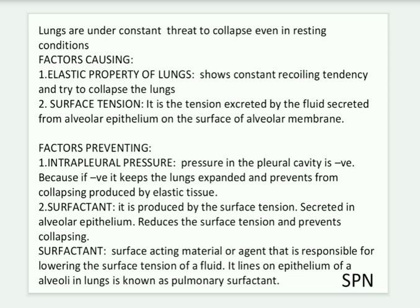The factors preventing collapse are intrapleural pressure and surfactant. Intrapleural pressure is the pressure in the pleural cavity; it is negative, which keeps the lungs expanded and prevents collapse, produced by elastic tissue. Surfactant reduces surface tension and prevents the collapsing tendency.